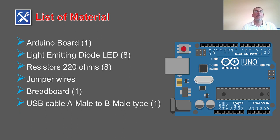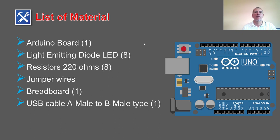List of materials: you're going to need an Arduino board — could be Uno, I'll talk about that. You're going to need LEDs, or light emitting diodes. You're going to need some resistors — 220 ohms, but any value from 220 to 1K (1000 ohms) should work. You'll also need some jumper wires, a breadboard, and a USB cable.